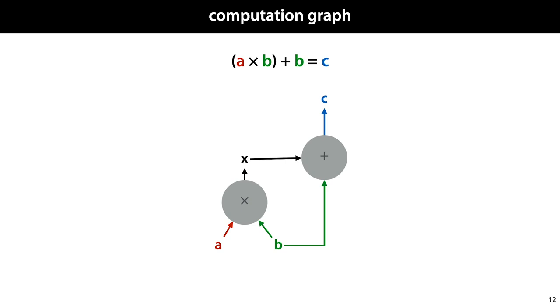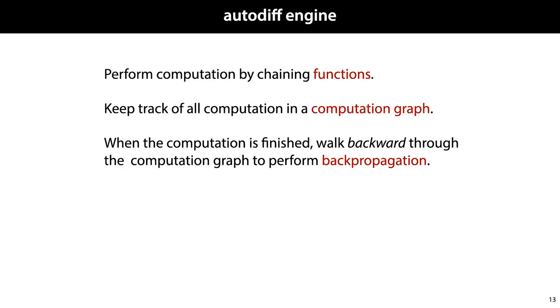In the following slides, if we are not interested in the specifics of the function being applied, we will omit the circles in these diagrams, as we did in the previous lectures, and show only the nodes representing data. And with this, we can define a deep learning system, also known as an automatic differentiation engine. We perform our computation by chaining together functions. We keep track of all computation in a computation graph, and when the computation is finished, we walk backward through the computation graph to perform backpropagation and work out the gradients.